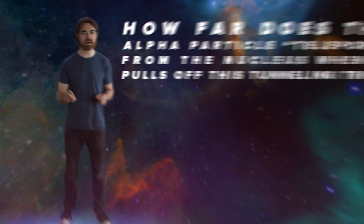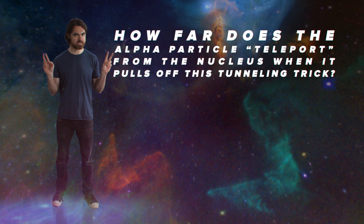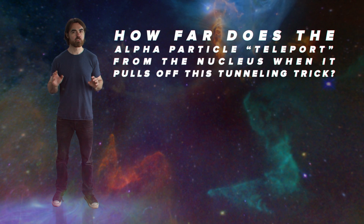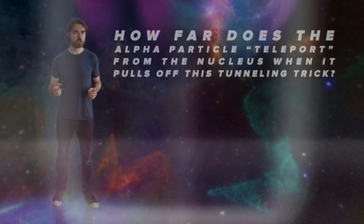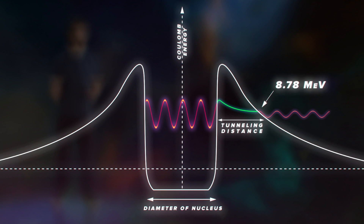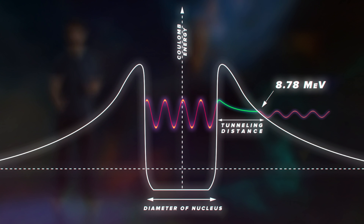And the extra credit question: how far does the alpha particle teleport from the nucleus when it pulls off this tunneling trick? To successfully tunnel, the alpha particle needs to reach a lower energy state. That happens when the potential energy of the Coulomb force trying to drive it away from the nucleus is equal to the kinetic energy of the particle.